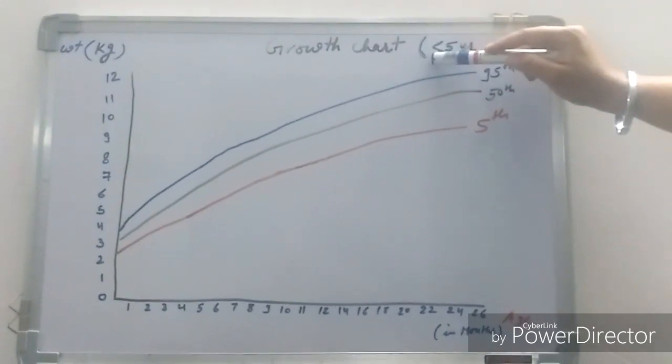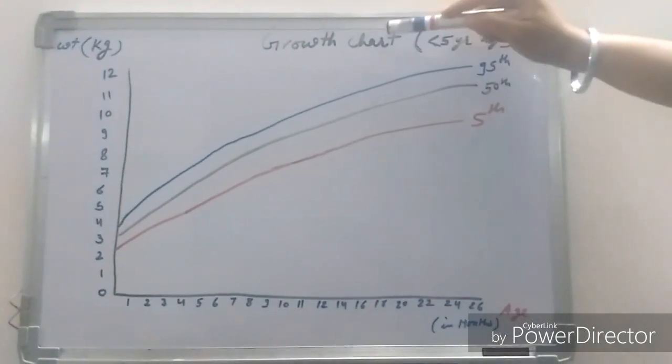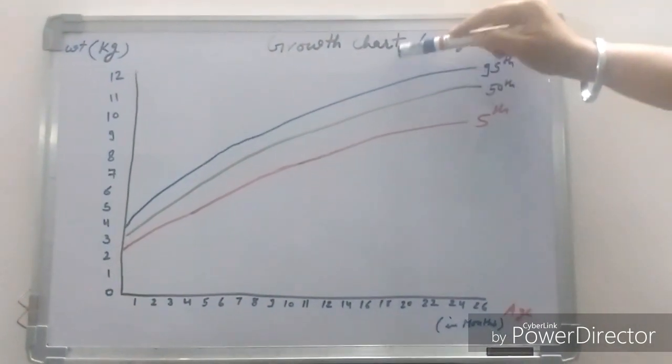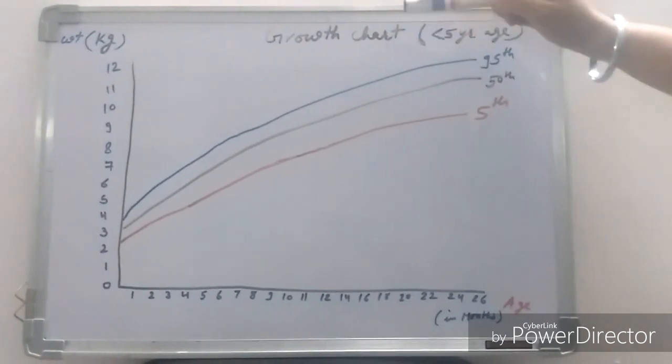If weight is more than 95th percentile, that means baby is gaining more weight. So overweight or obesity can be the complication.